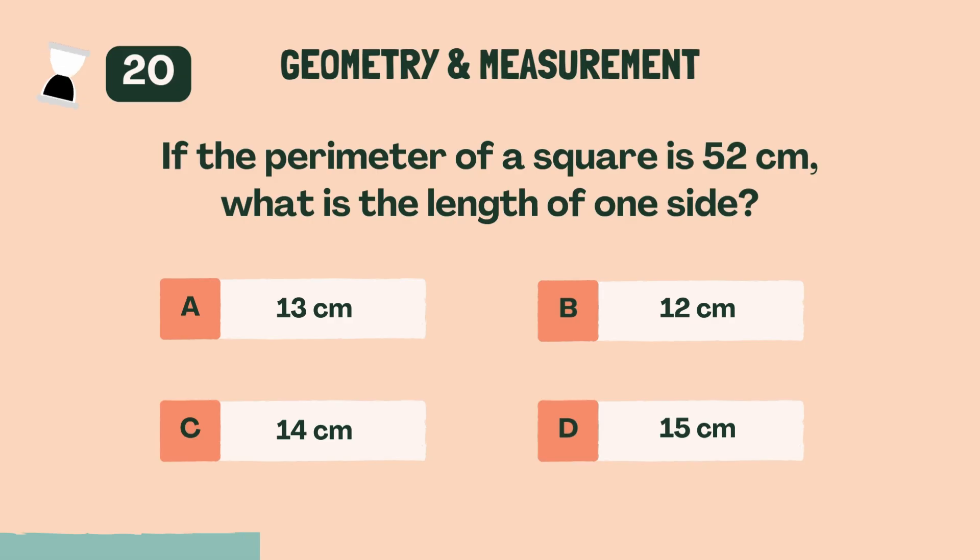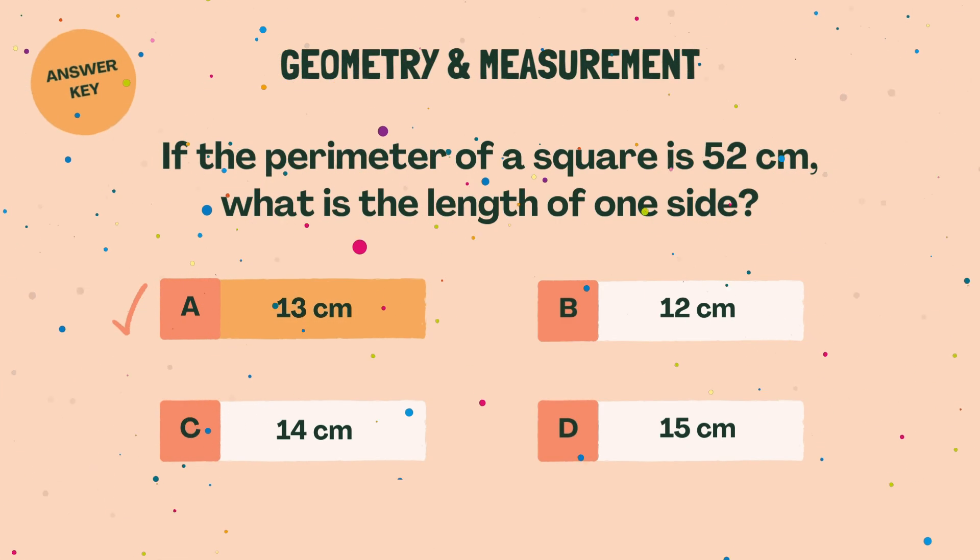If the perimeter of a square is 52 centimeters, what is the length of one side? A, 13 centimeters.